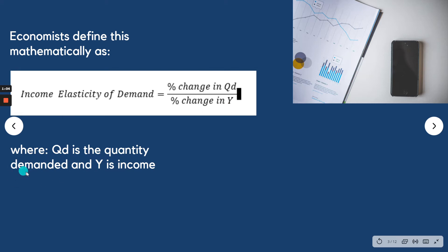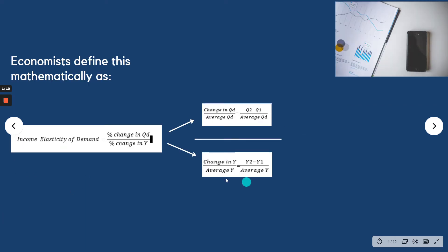The percentage change in QD is the change in quantity, which is Q2 minus Q1 over average quantity demanded. And the percentage change in Y is Y2, the income 2, minus income 1 divided by the average income.